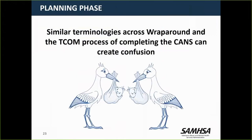Anything to add, John? The challenge is there are some places that say if you have a two or three on the CANS, you've got to do something about it — but that's naive, that's not really accurate, you have to take it further. You can use the CANS to help think about how you might develop a needs statement in wraparound and what the driving issues are that need to be addressed. But you shouldn't be pre-populating. It makes no sense.